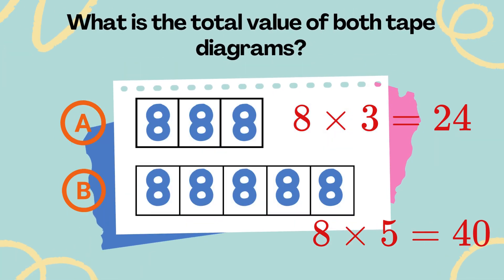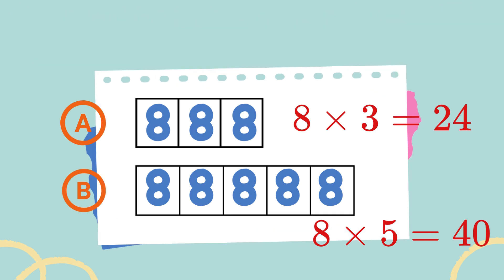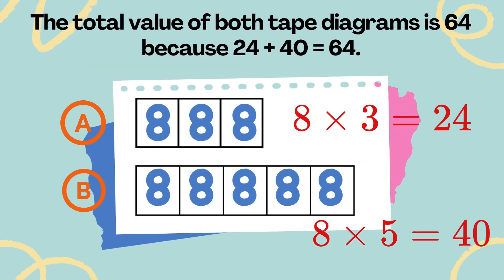What is the total value of both tape diagrams? The total value of both tape diagrams is 64 because 24 plus 40 equals 64.